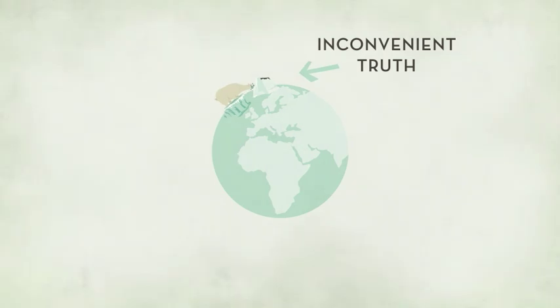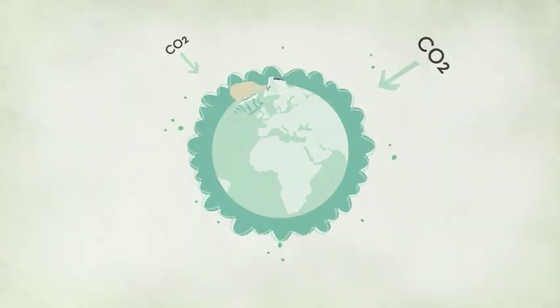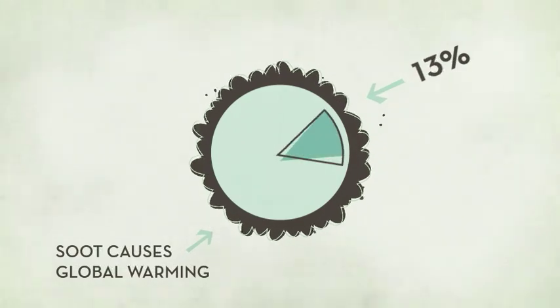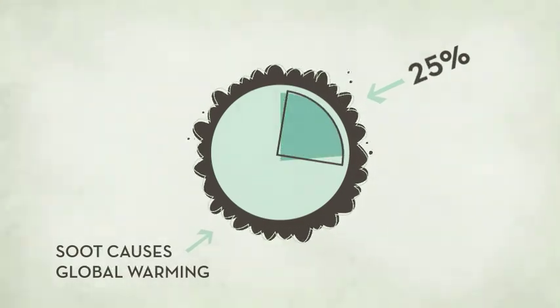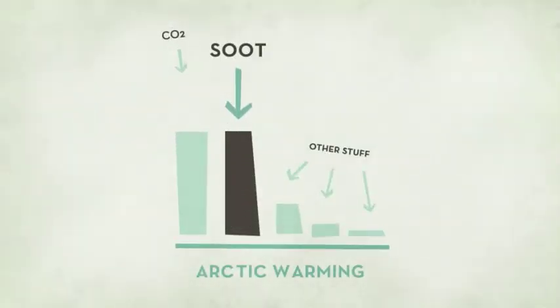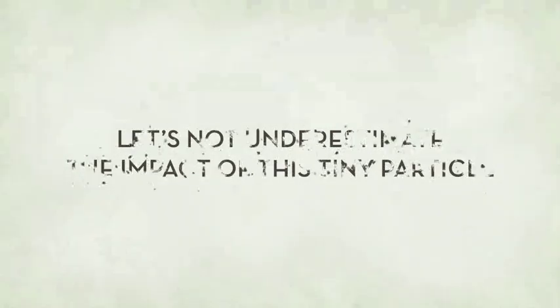Climate change has been a big thing for a while, and carbon dioxide has been its main cause. Scientists estimate that soot causes 25% of human-caused global warming. It's the second leading cause of Arctic warming after carbon dioxide.